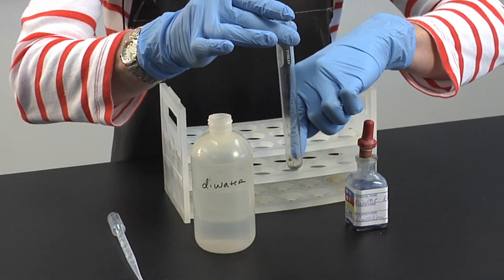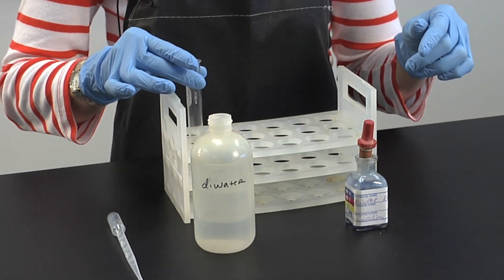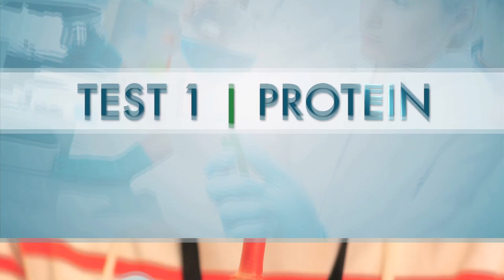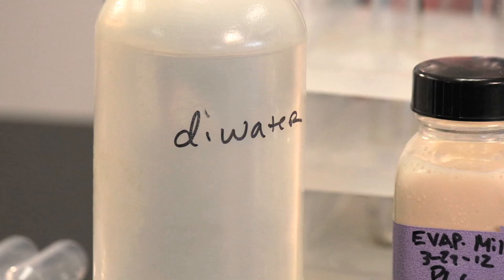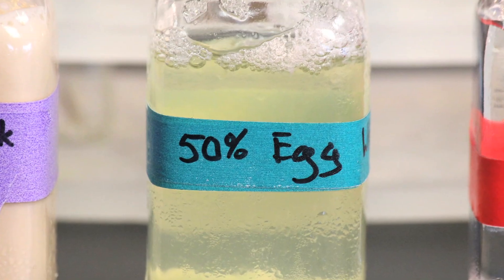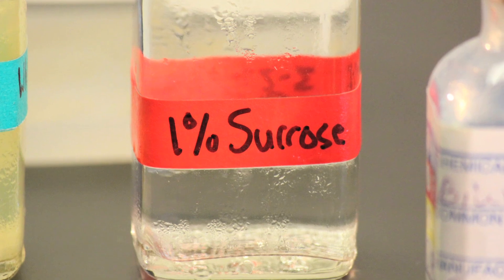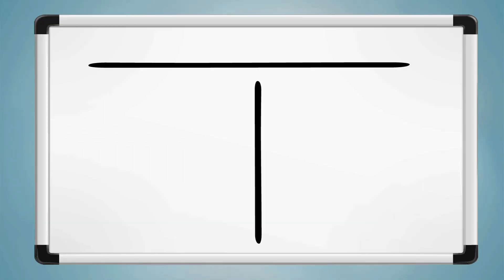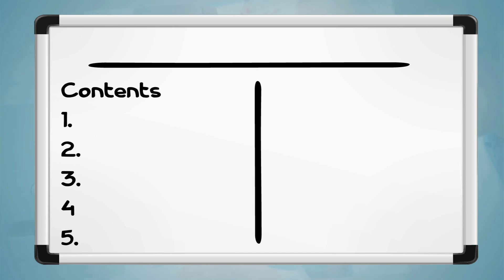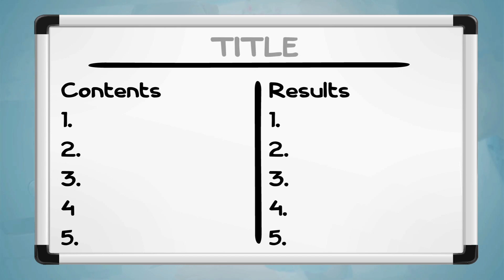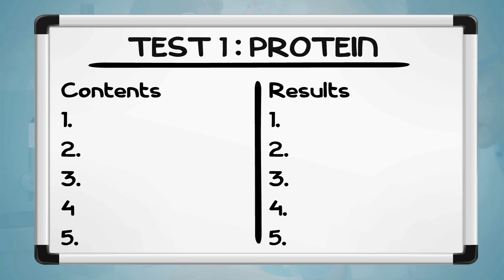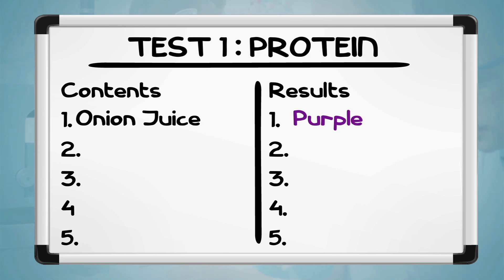We will begin with the test for protein using the biuret reagent, testing DI water, milk solution, 50% egg white solution, and 1% sucrose solution. Before we get started, you may want to compose a results table that includes a column for the contents of each test tube and a column for the test results, with a strong title — for example, 'The Test for Protein.' Label this Table 1. The results you will input will be the final color of the substance when mixed with the biuret reagent.